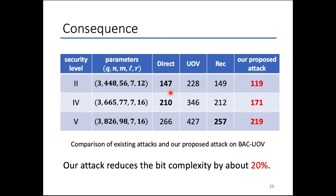I show the table comparing the complexity of existing attacks on BSC UOV — the direct attack, UOV attack, reconciliation attack — and our proposed attack on each parameter set. Here, q is the order of the finite field, n is the number of variables, m is the number of equations, l is the block size, and r is derived from other compression techniques. The bold values show the complexity of the best existing attack on each parameter set, and the complexity of our proposed attack is lower than these values. As a result, our proposed attack reduces the bit complexity by about 20% when compared with the existing attacks on UOV.